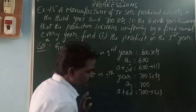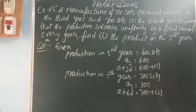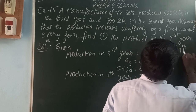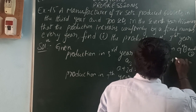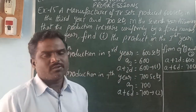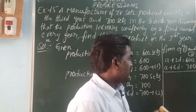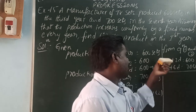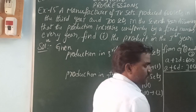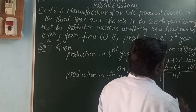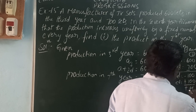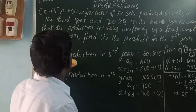Production in the seventh year: a7 = a + 6d = 700. That is equation two. From equations one and two: a + 2d = 600 and a + 6d = 700. These are a pair of linear equations in two variables a and d. Using elimination, subtract equation one from two: -4d = -100, so d = 25.